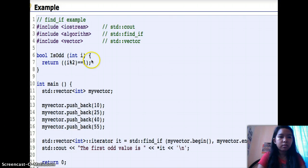As we can see, we're going to use this part, i modulo 2 equals equals 1, to know the output first odd value. We have 10, 25, 40, and 55. So first we're going to use the 10.